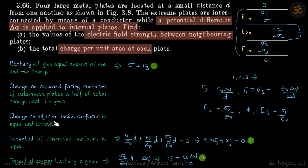Charges on adjacent inside surfaces are equal and opposite. So if this is sigma one, then we have minus sigma one, sigma two, minus sigma two, sigma three, minus sigma three. The potential of connected surfaces is equal. Let's say the field between the first two plates is E1, between the next two is E2, and between the last two is E3.